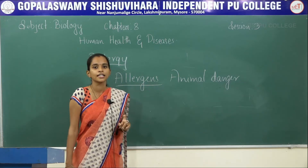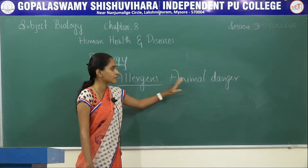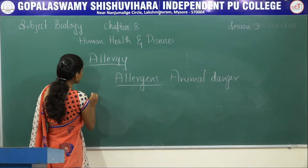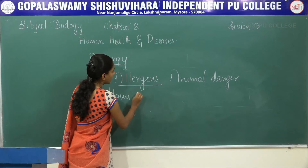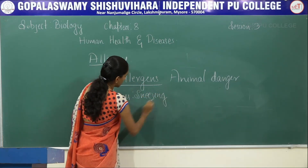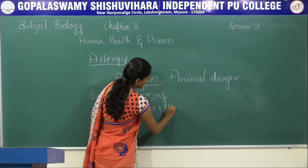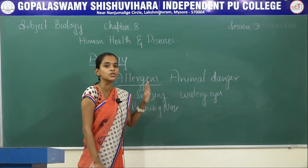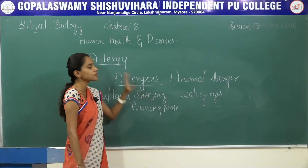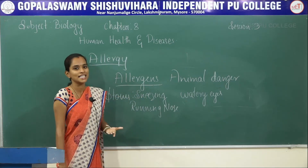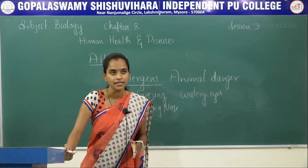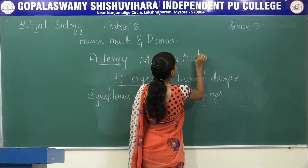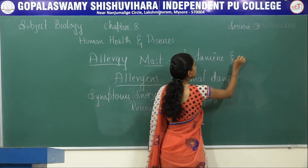Allergy is the exaggerated immune response to allergens such as dust mites, pollen grains, and animal dander. The symptoms of allergy include sneezing, running nose, watery eyes, and in severe cases, breathing problems. These symptoms occur because of the release of certain chemicals by mast cells, which are immune cells that release histamine and serotonin.